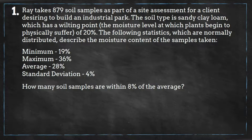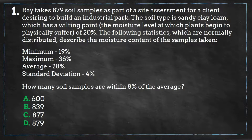Is it A: 600, B: 839, C: 877, or D: 879?